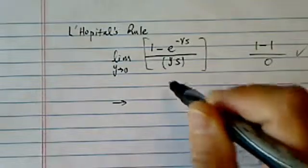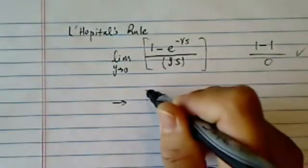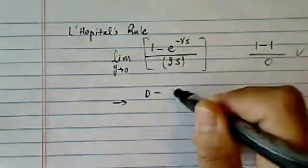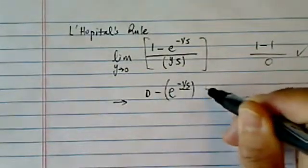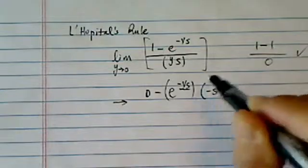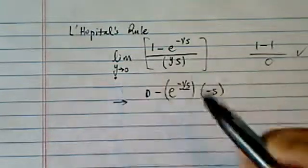And then let's take the limit. So the top is 0 minus e to the derivative itself. Now, since there are two terms, you do have to use chain rule,